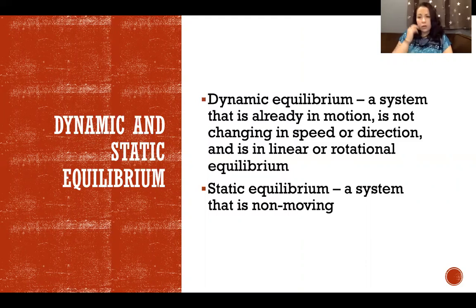Linear and rotational equilibrium can both be either dynamic or static. Dynamic means the state of motion is not changing, and static means the object is not moving.